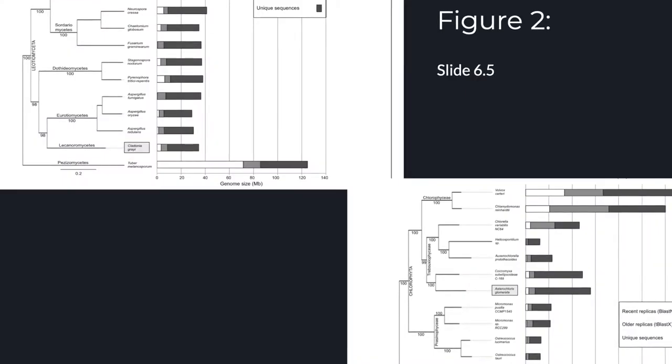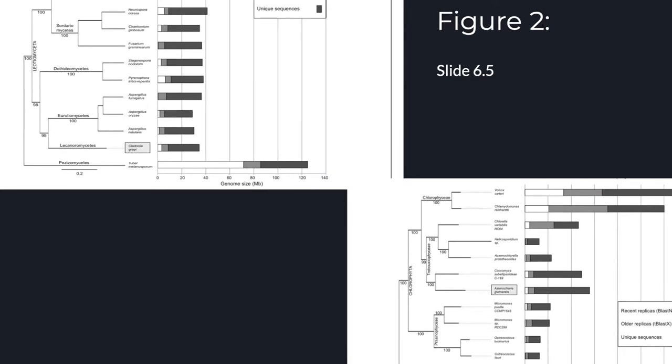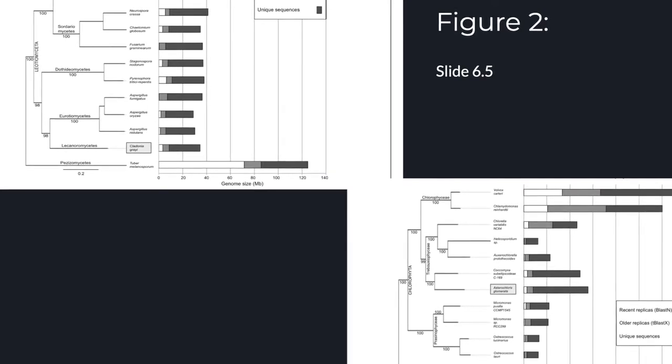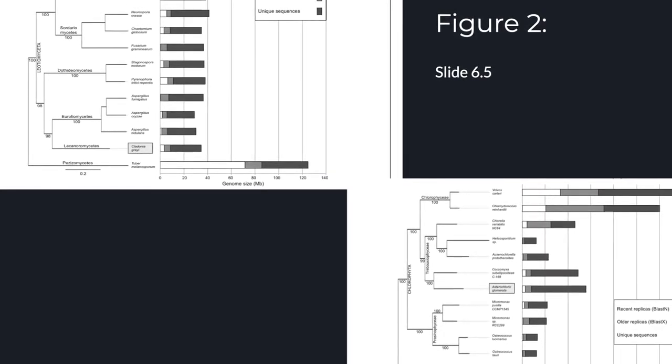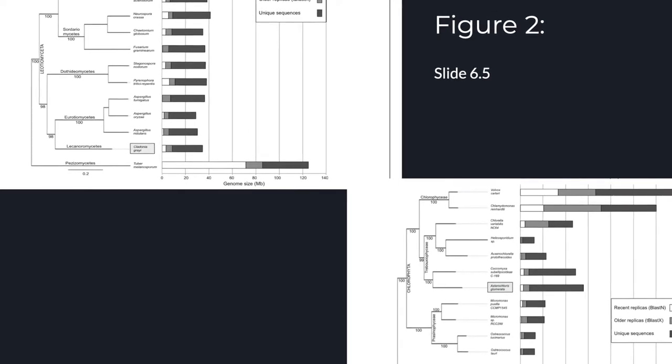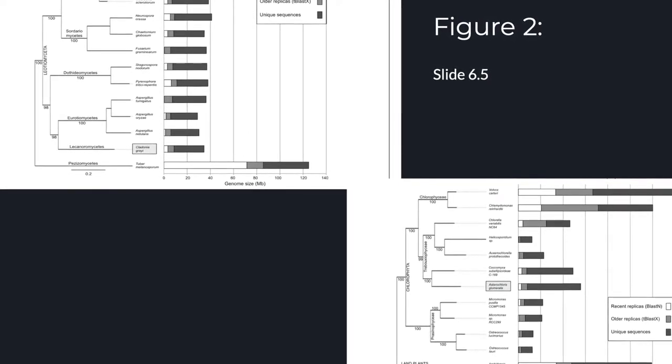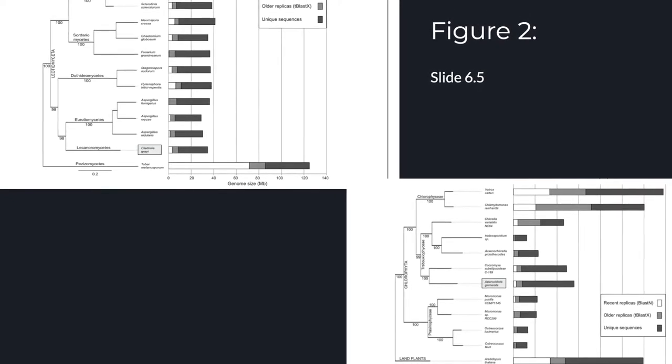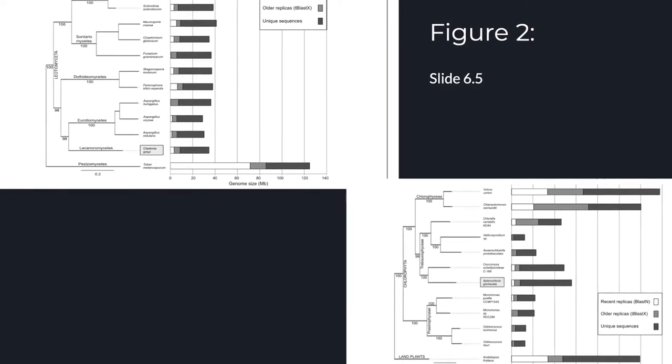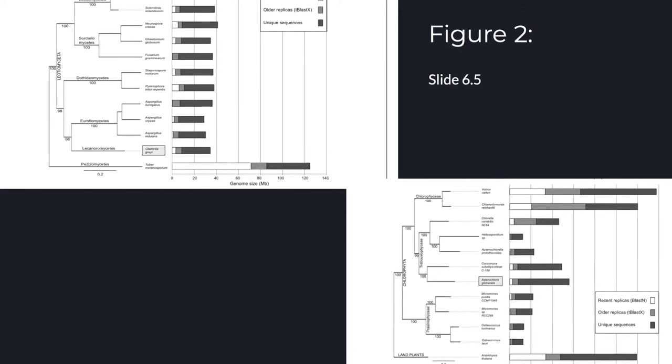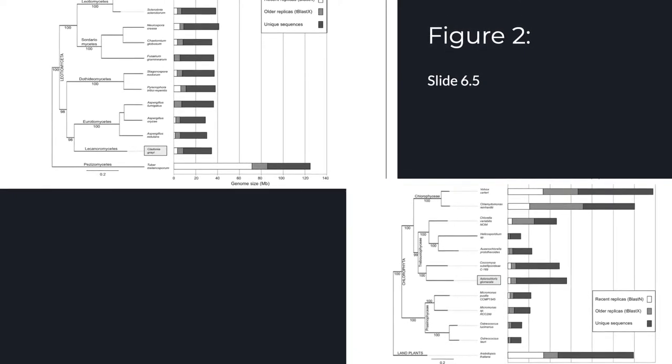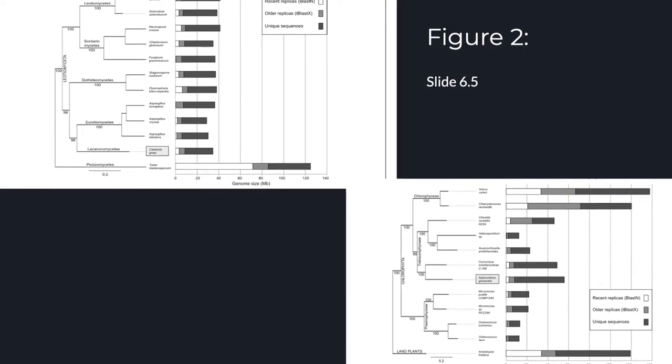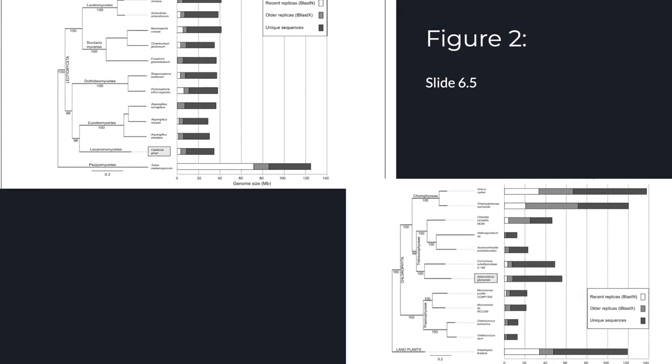In figure two, they compared their whole genome assemblies of fungi Cladonia mycobiont and the algae Asterochloris the photobiont to databases and created a phylogenetic tree. They compared their whole genome assemblies to different phylogenetic groups, as you can see on the left for the algae Chlorophyta Phylum. You can see recent and older replicas of their DNA sequences to each other along with their own unique sequences in their own genome. The unique sequences make them their own species, different from each other on the tree.